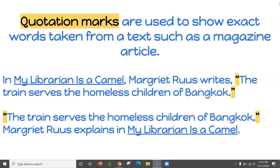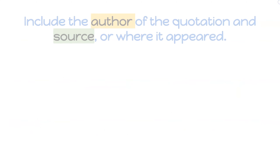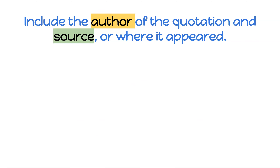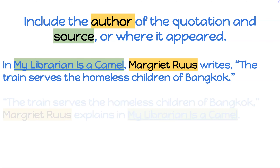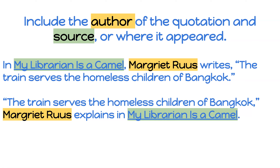We know that it's a book or an article title because we've underlined it. We want to make sure that we include the author of the quotation and the source or where it appeared. So in our previous example the author was Margaret Roos and the source is her book titled My Librarian is a Camel. We see in the two examples that the title of the book and the author Margaret Roos are both included in the sentence — identifying who wrote this amazing sentence and where we read it.